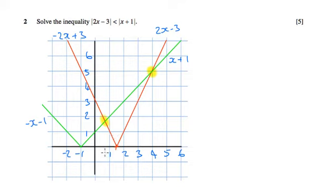If we can find out what these two points are... well, one's looking like it's 4, but I'll solve that properly in a second. Then we can say that the red line is below the green line between these two points.